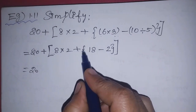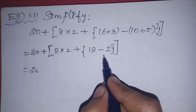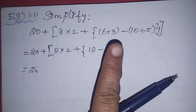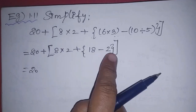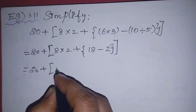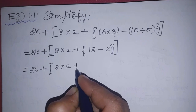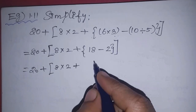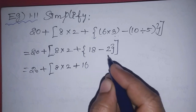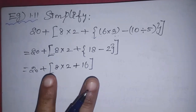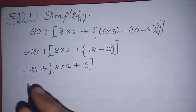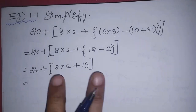We remove the inner brackets step by step. First, the small bracket: 10 divided by 5 is 2. Then the two minus 2 is removed. Now 6 into 3 minus 2: 18 minus 2 equals 16. The curly bracket is removed. Now the square bracket is removed step by step.